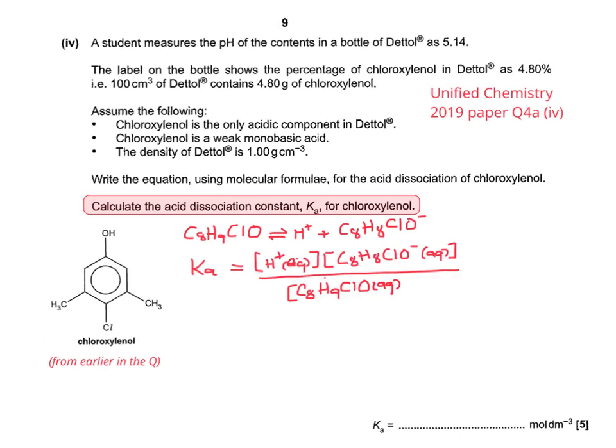So we have to think about what it is that we need to calculate. The first thing is the H+. So we know that we've got 5.14 as our pH.